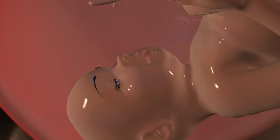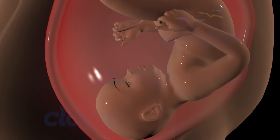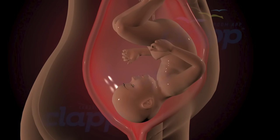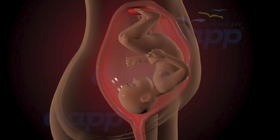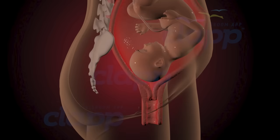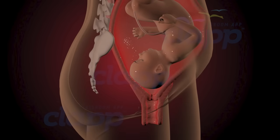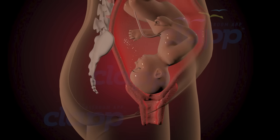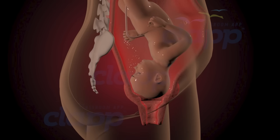And finally, the moment arrives — the miracle of childbirth. Childbirth typically begins with the onset of early labor, which can last for several hours or even days. During this stage, the cervix begins to dilate and efface in preparation for the baby's descent through the birth canal, and with each contraction, the mother brings her baby one step closer to meeting the world.